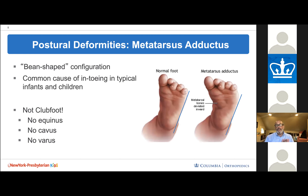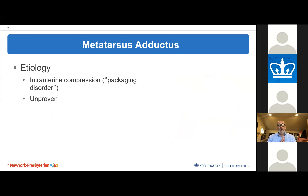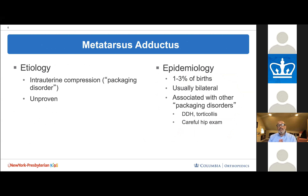Metatarsus adductus is a foot that looks like a bean — it has a curvature and is a very common cause of in-toeing in infants. It is not a clubfoot — it is purely adductus of the forefoot with no equinus, no midfoot cavus, and no hindfoot varus. We believe it has to do with intrauterine compression, so we call these 'packaging disorders.' It is seen in about 1% to 3% of all births, typically bilateral, and associated with other packaging disorders such as hip dysplasia and torticollis.